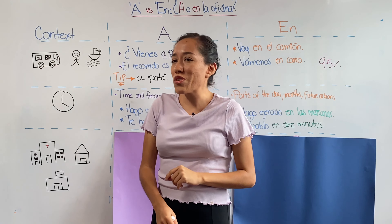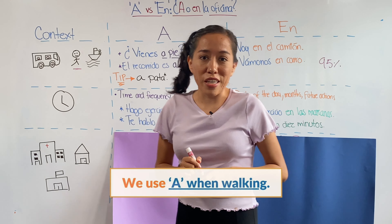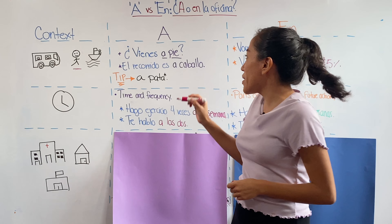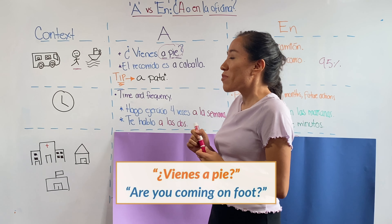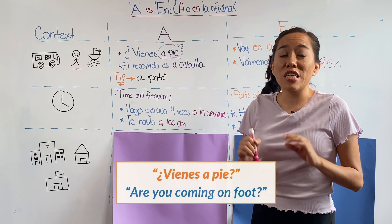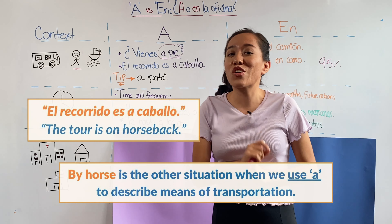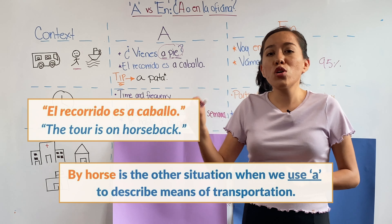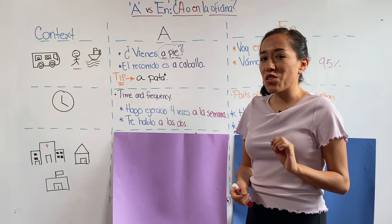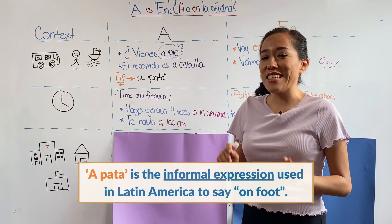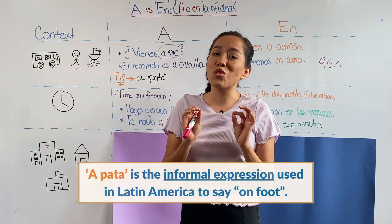However, there are two situations where you cannot use en. The first means of transportation is yourself — when you're walking, you say vienes a pie. A pie is the way we say 'on foot' in Spanish. The other exception is a horse: el recorrido es a caballo — the tour is on horseback. A cool tip: in Latin America, we say a pata instead of a pie. However, a pata is very informal, so make sure you use it in the right situation.